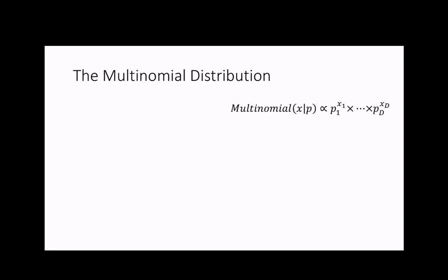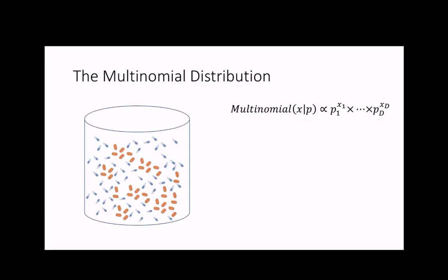Now remember, our data is made up of sequencing counts. Because of this, we need to explicitly model these sequencing counts using counting distributions. The simplest counting distribution is the multinomial distribution. Let's imagine that we have a huge environment with billions of microbes. If I remove one microbe from the system, the system itself isn't really impacted. If the sample is sufficiently small relative to the environment we are trying to measure, then we can make the assumption that the microbial counts can be characterized by a multinomial distribution.